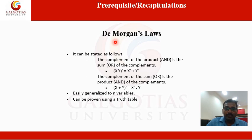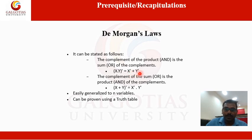In the previous class we discussed De Morgan's Law. We have two De Morgan's Laws. The first states that the complement of the product is the sum of the complements: the complement of x dot y is equal to x dash plus y dash. The second law states that the complement of the sum is the product of the complements, written as x dash dot y dash.